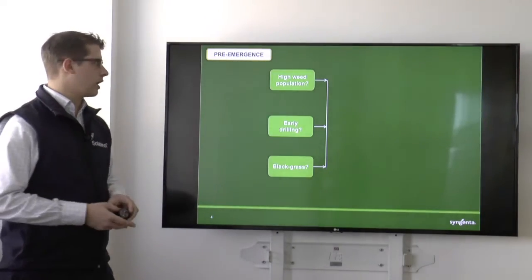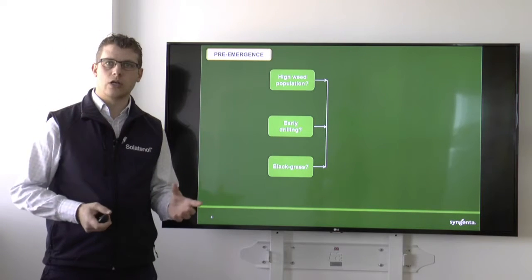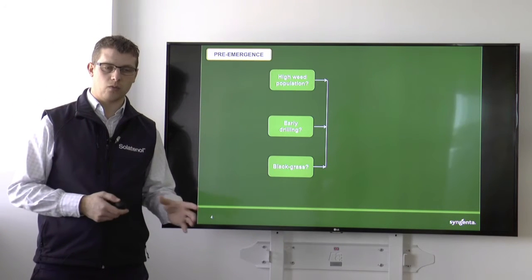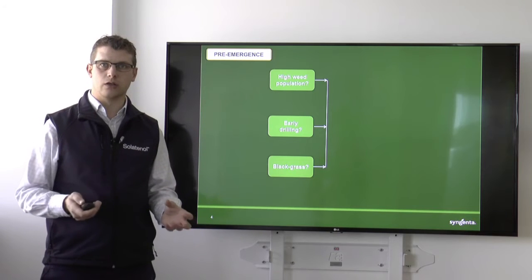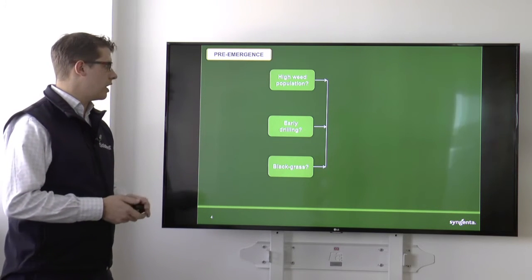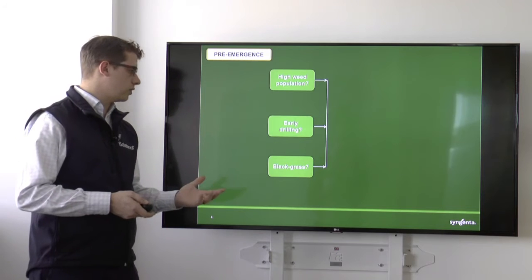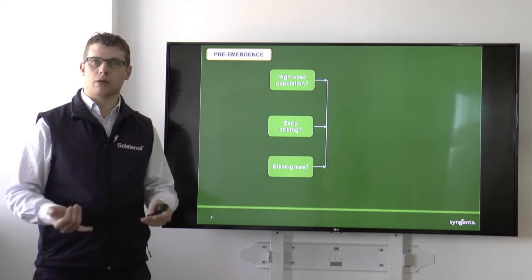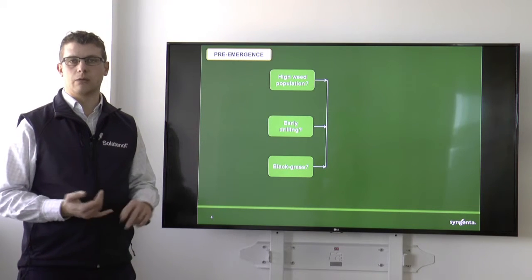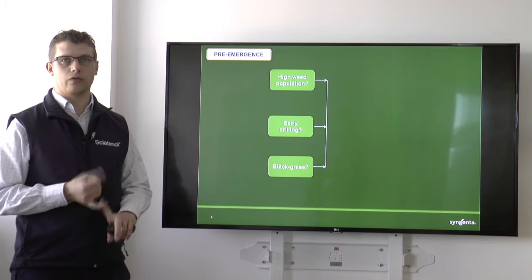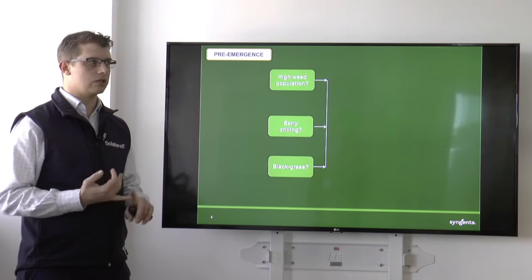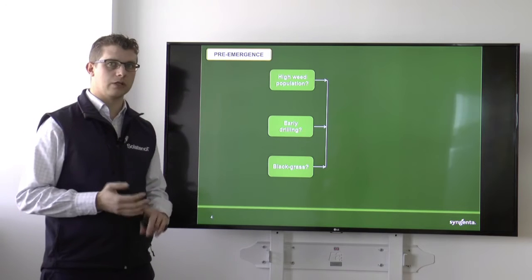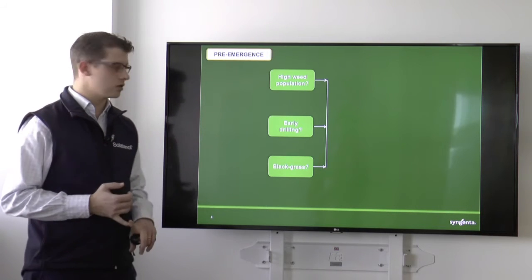So let's have a look at pre-emergence and talk a little bit about where we're going to use a pre-emergence herbicide or not. First of all, when we think about where we're going to plant our maize, we need to think about our weed spectrum. If we've got things like blackgrass, I know obviously it's particularly a problem in the east, but it's travelling west at a rate of knots.